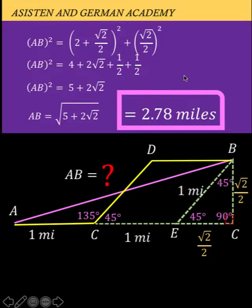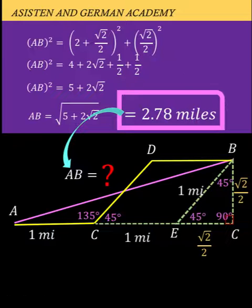Therefore, segment AB is equal to 2.78 miles, and that solves our problem. Thank you very much, and we hope to see you again in our next video. Bye for now.